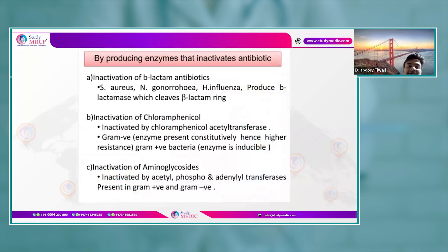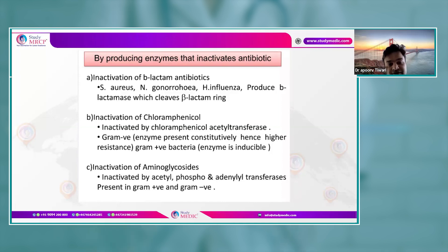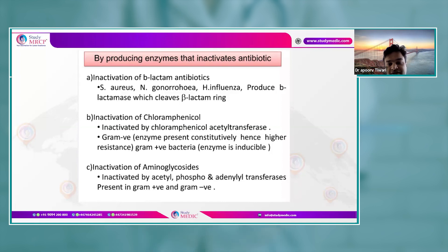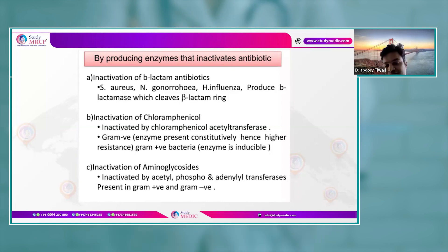Resistance by enzyme production: inactivation of beta-lactam antibiotics — Staph, Serratia, and Haemophilus influenzae produce beta-lactamases which cleave the beta-lactam ring. Inactivation of chloramphenicol occurs by acetyltransferase; gram-negative bacteria inherently possess this enzyme, so chloramphenicol is reserved for gram-positive infections. Aminoglycosides are inactivated by acetyl-, phosphoryl-, and nucleotidyl-transferase enzymes, present in both gram-positives and gram-negatives.